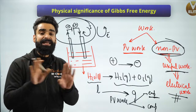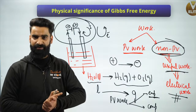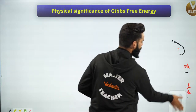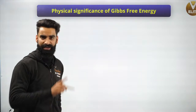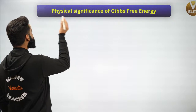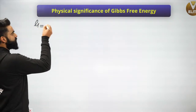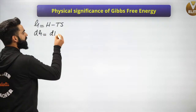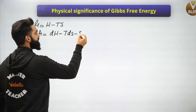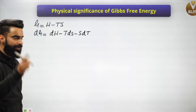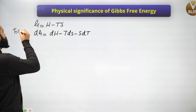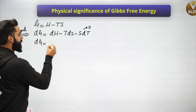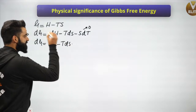Now let's talk about the physical significance of Gibbs free energy. We know G equals H minus TS. Differentiating: dG equals dH minus TdS minus SdT. At constant temperature, dT equals zero, so dG equals dH minus TdS. We also know enthalpy H equals U plus PV.